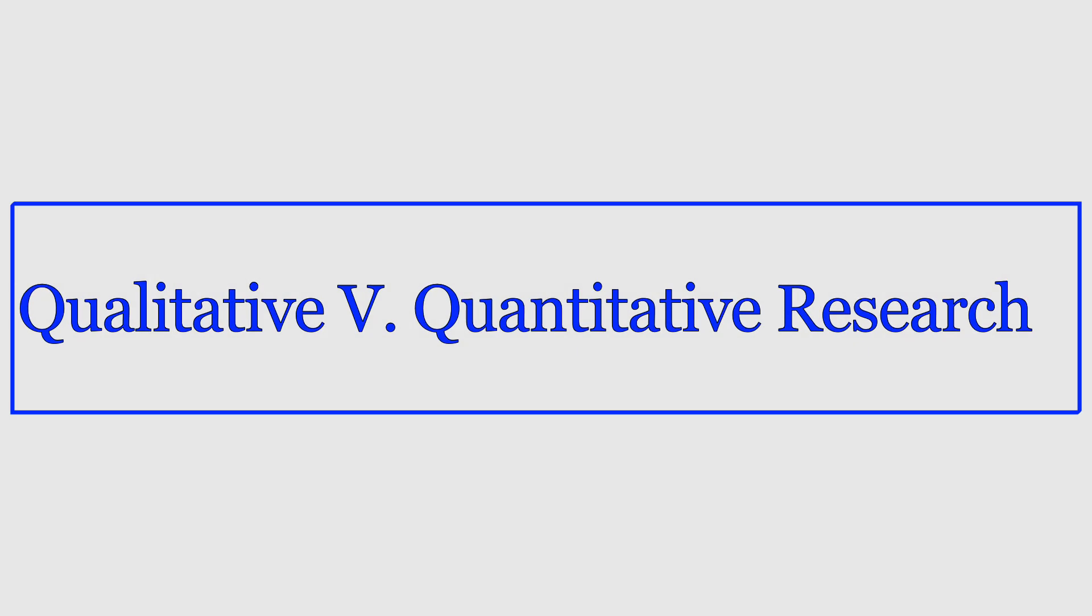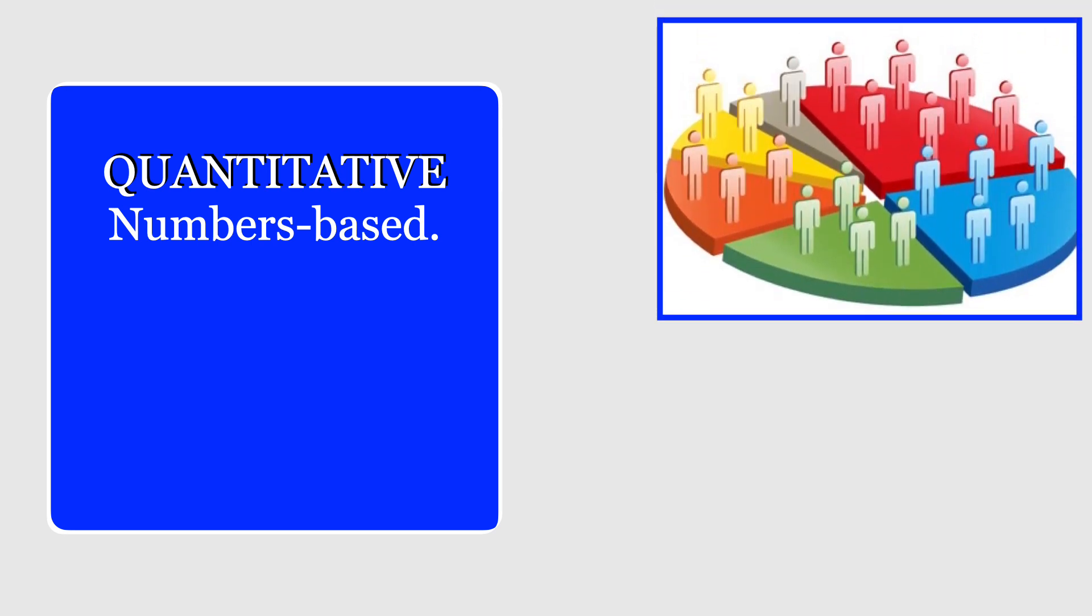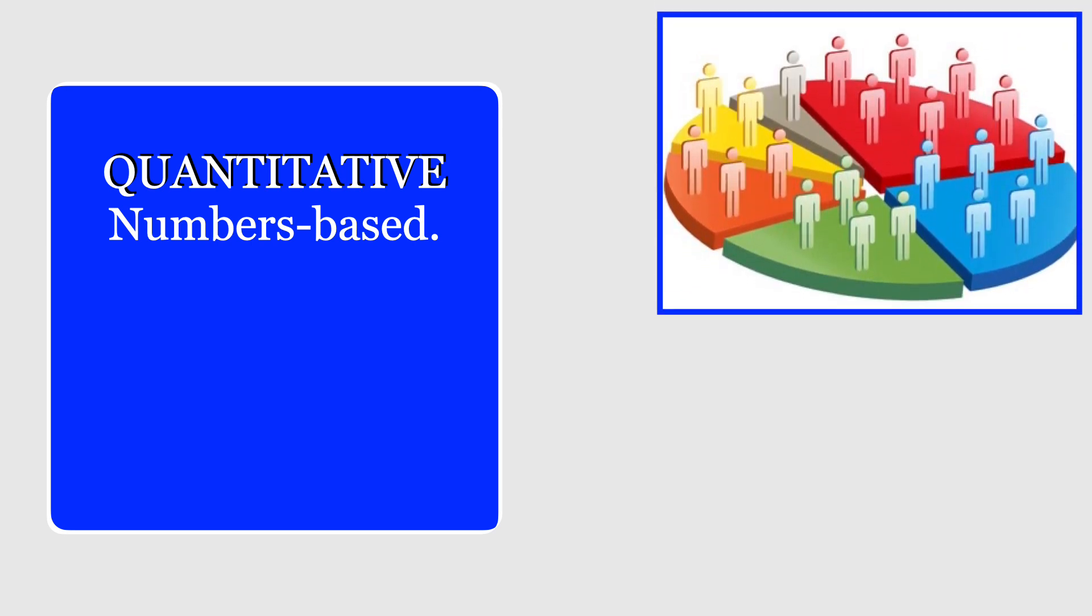So what exactly is the difference between qualitative and quantitative research? Quantitative is more numbers-based. We are looking at percentages of people who answer a question a certain way or a percent of people based on their demographics, their race and ethnicity, their sex or gender.